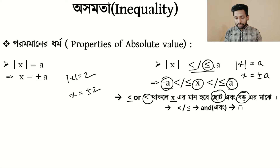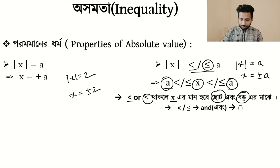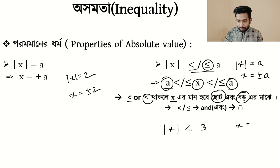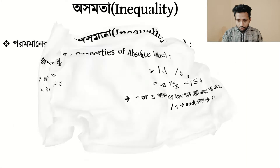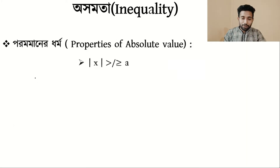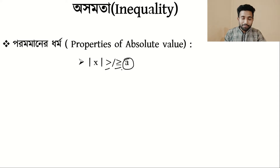So for less than or equal, follow: if modulus of x is less than 3, then x is between minus 3 and plus 3 — x is less than 3 and greater than minus 3.